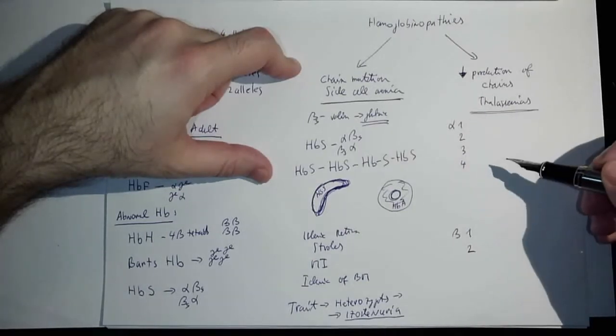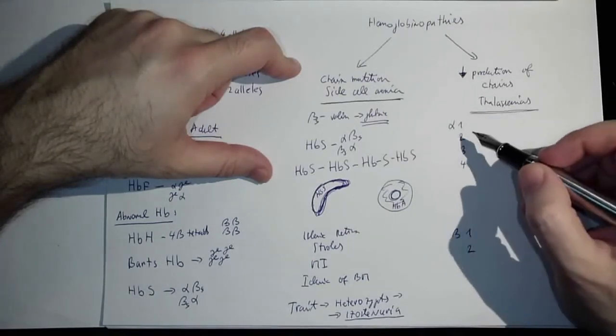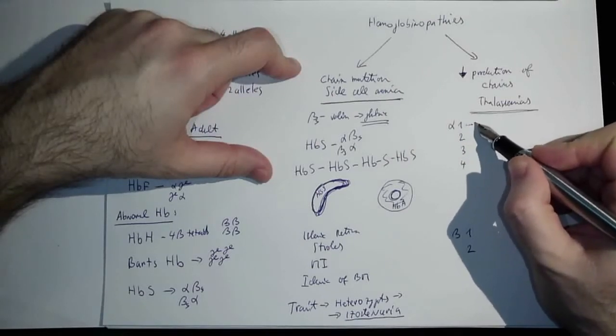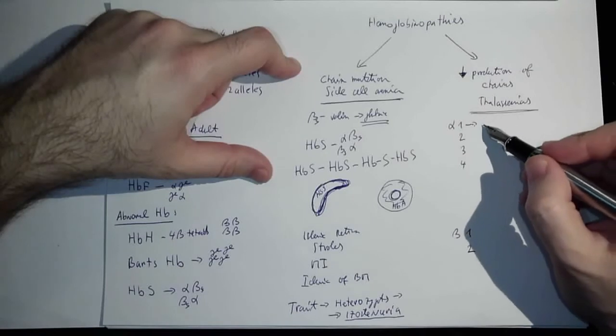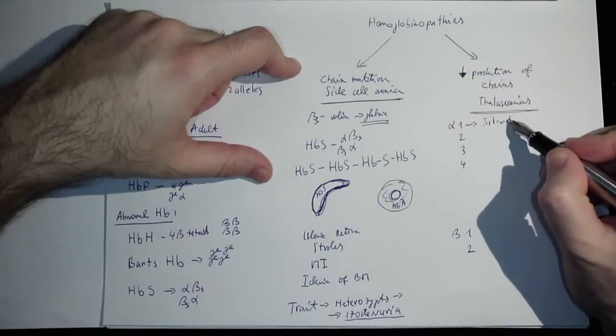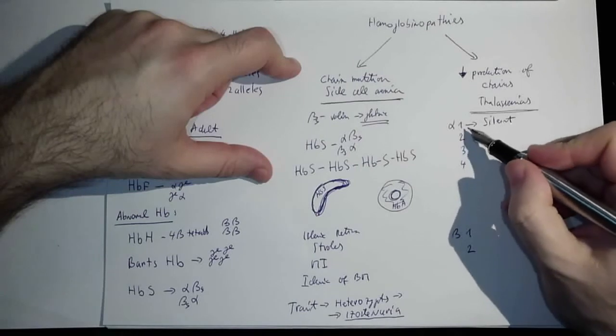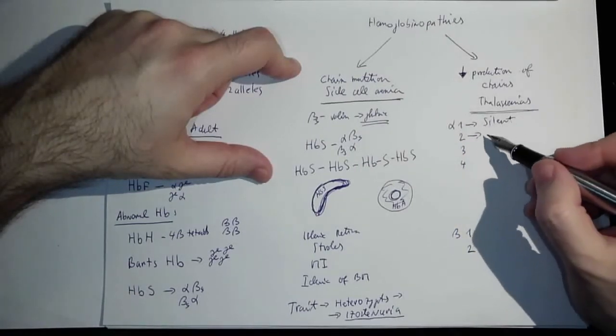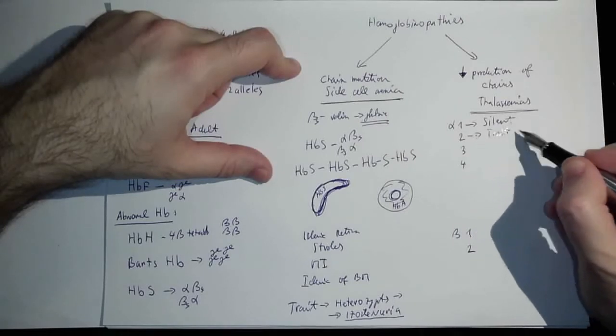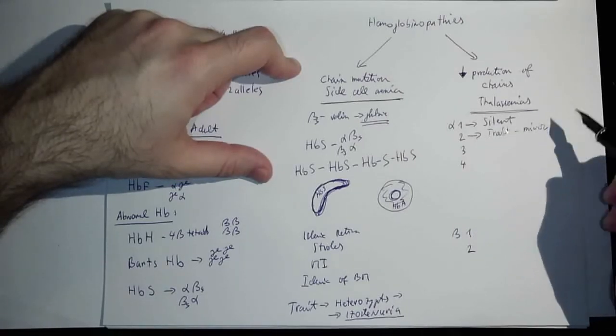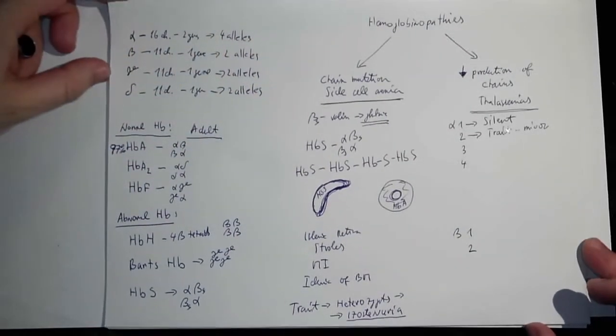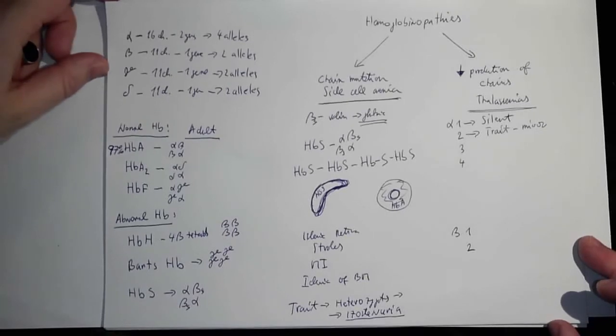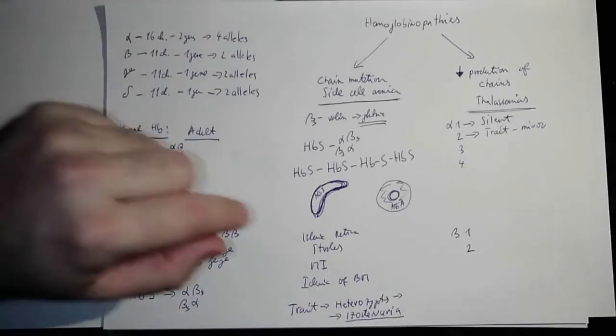Because alpha has four alleles, we got four options. It depends on how many alleles are functional. If one is deleted and not functioning and the others are functioning, we call this a silent form—they have no problem, totally fine. If two alleles are not functioning, then we call this a trait or thalassemia minor. They have a very weak anemia, and it's not such a big deal.